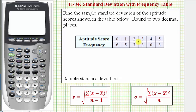So the first step is to enter the data. Enter the aptitude score in L1 and the frequency in L2. We'll press stat, enter.